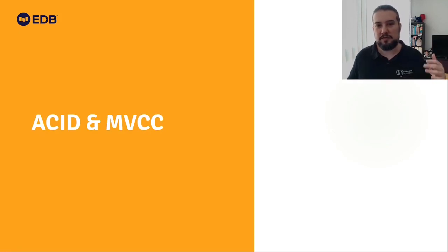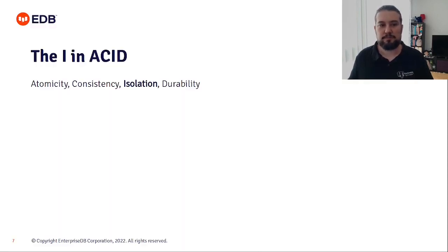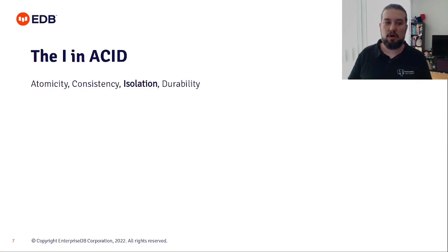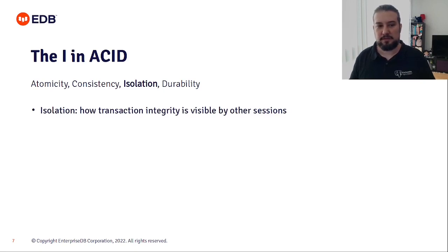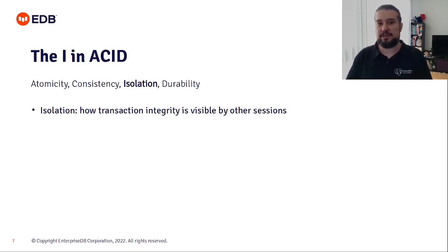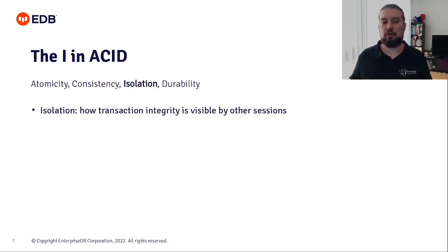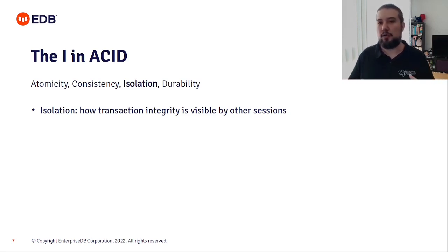ACID in a database context means atomicity, consistency, isolation, and durability. For this talk we focus on the I — isolation. Isolation is how transaction integrity is visible to other sessions: leave me alone, I want to do my own work, and I don't want my data reading or writing operations affected by what other users are doing. Transaction integrity and how it relates to other sessions executing things at the same time is what isolation addresses.